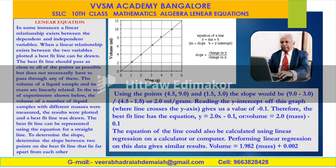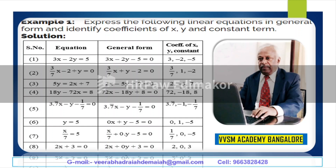The equation of the line could also be calculated using linear regression on a calculator or computer. For example, express 3x minus 2y is equal to 5 in general form: transfer 5 to the left-hand side to get 3x minus 2y minus 5 is equal to zero, where the coefficient of x is 3, the coefficient of y is minus 2, and the constant is minus 5.